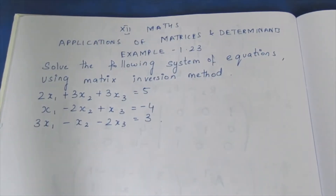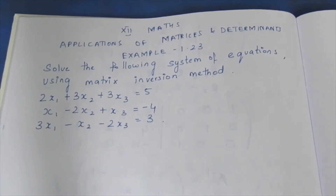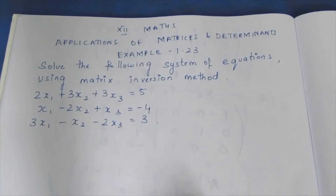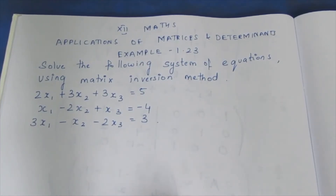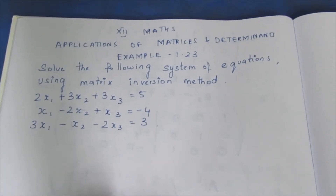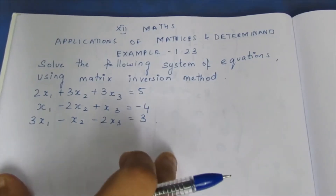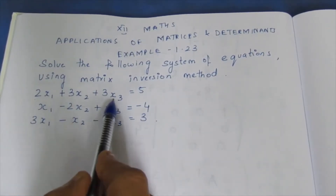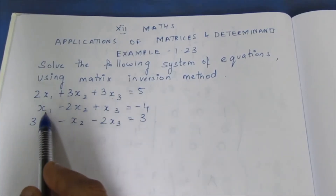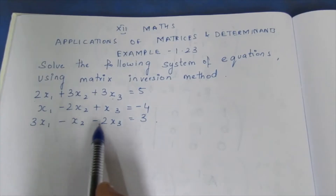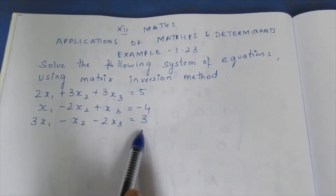Hello viewers, I am Aitli. In 12th max applications of matrices and determinants, Example 1.23. Let's look at the question: Solve the following system of equations using the matrix inversion method. The three equations are: 2x1 + 3x2 + 3x3 = 5, x1 - 2x2 + x3 = -4, and 3x1 - x2 - 2x3 = 3.